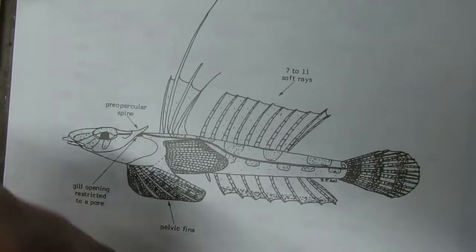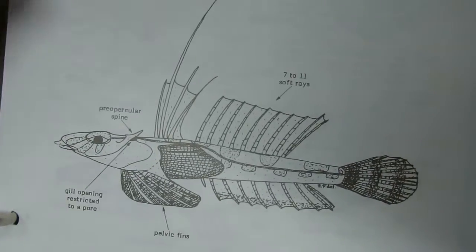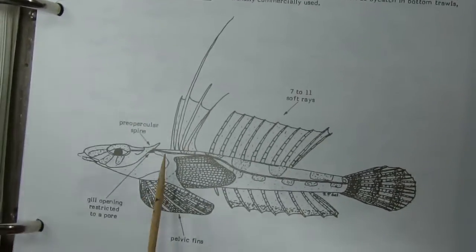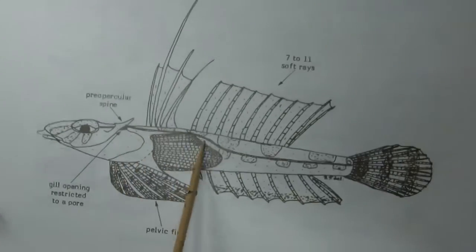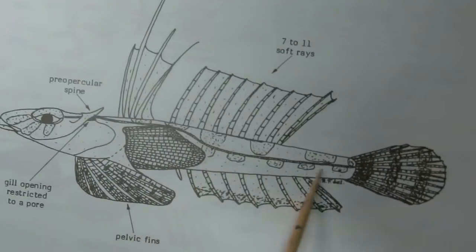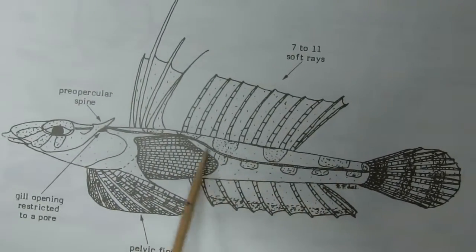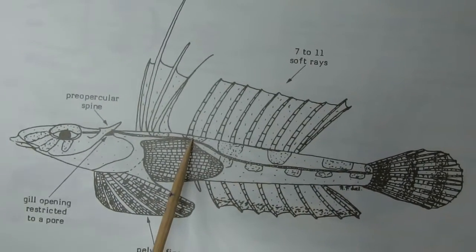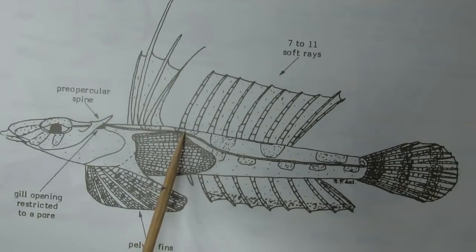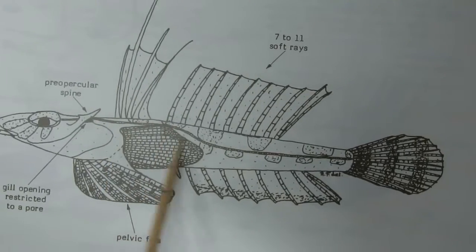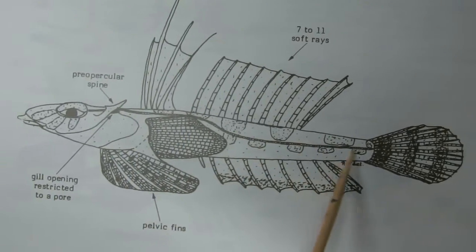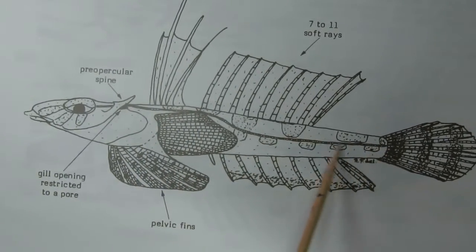Next family is Callionymidae. The lateral line consists of pores. In the case of Paracallionymus species, the lateral line has 29 to 40 upper and lower branches.